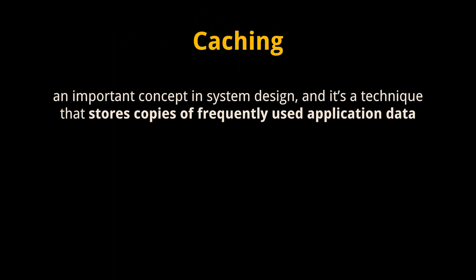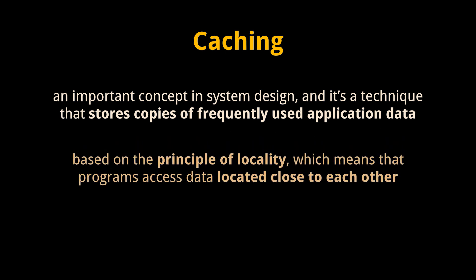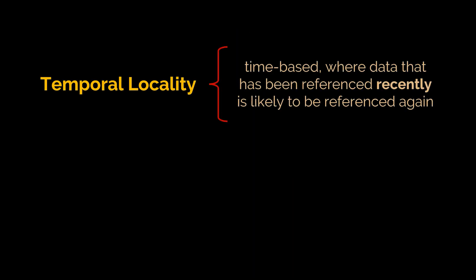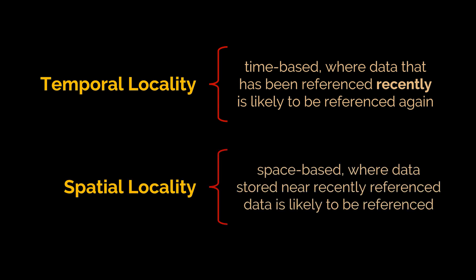The second topic for today is caching. Caching is an important concept in system design — it's a technique that stores copies of frequently used application data in a layer of smaller, faster memory to improve data retrieval times, throughput, and compute costs. Caching is based on the principle of locality: temporal locality, where recently referenced data is likely to be referenced again, and spatial locality, where data stored near recently referenced data is also likely to be referenced.